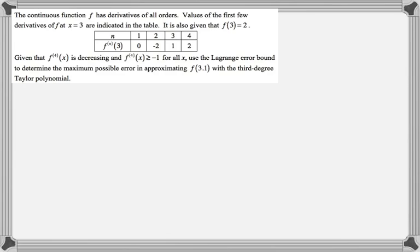This next part, we're given that the 4th derivative is decreasing and that the 4th derivative is greater than or equal to negative 1 for all x. We want the Lagrange error bound to determine the maximum possible error in approximating f of 3.1 with the 3rd degree Taylor polynomial. Alright, so we've got to remember the error term.